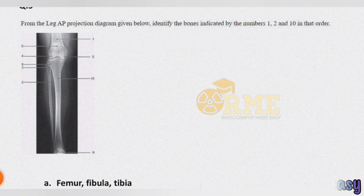Question number 5: from the leg AP projection diagram given below, identify the bones indicated by the numbers 1, 2, and 10 in that order.